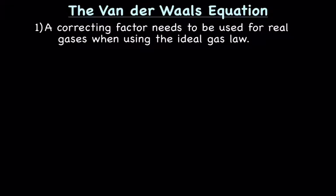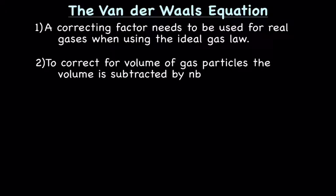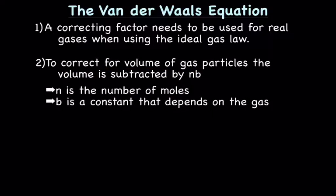A correcting factor needs to be used for real gases when using the ideal gas law. To correct for volume of gas particles, the volume is subtracted by nb, where n is the number of moles and b is a constant that depends on the identity of the gas. To figure out what b is, you're going to need to look at a table.